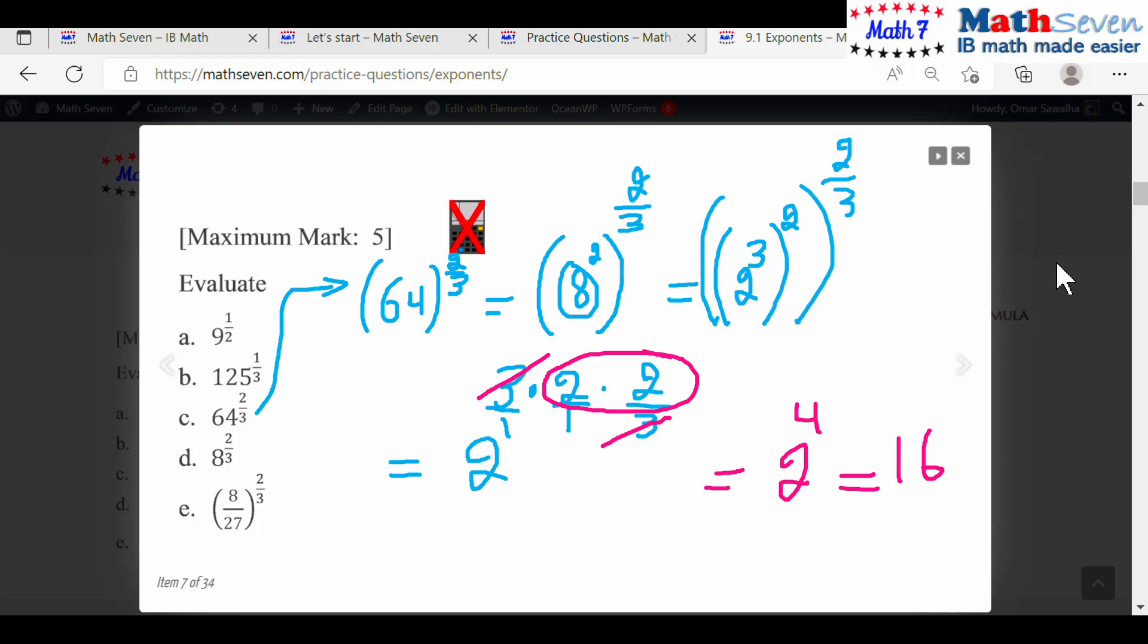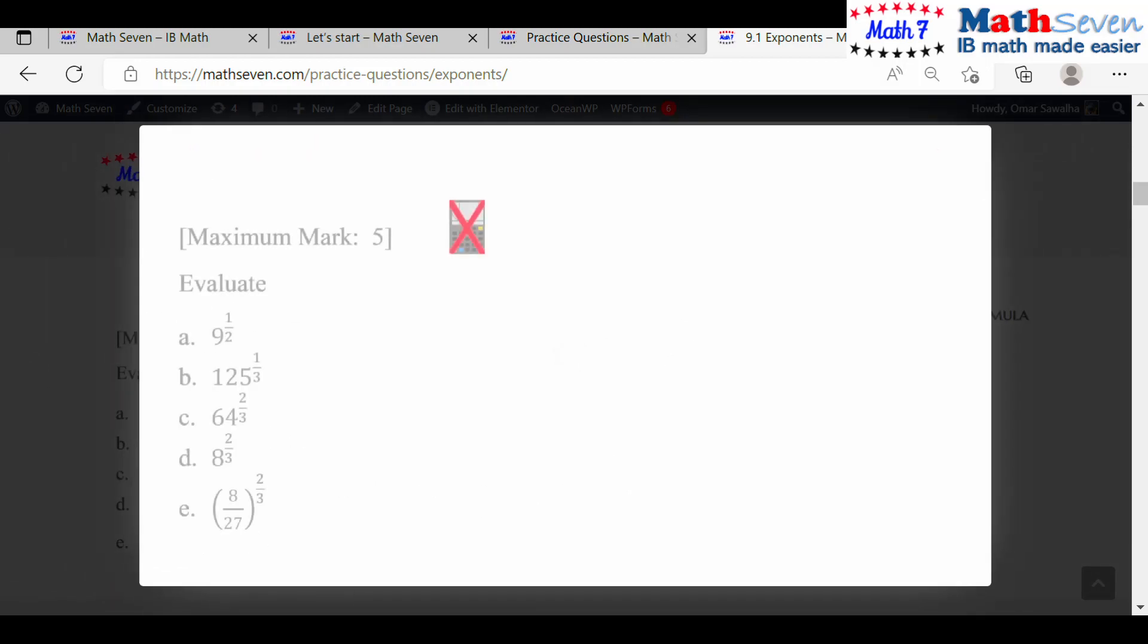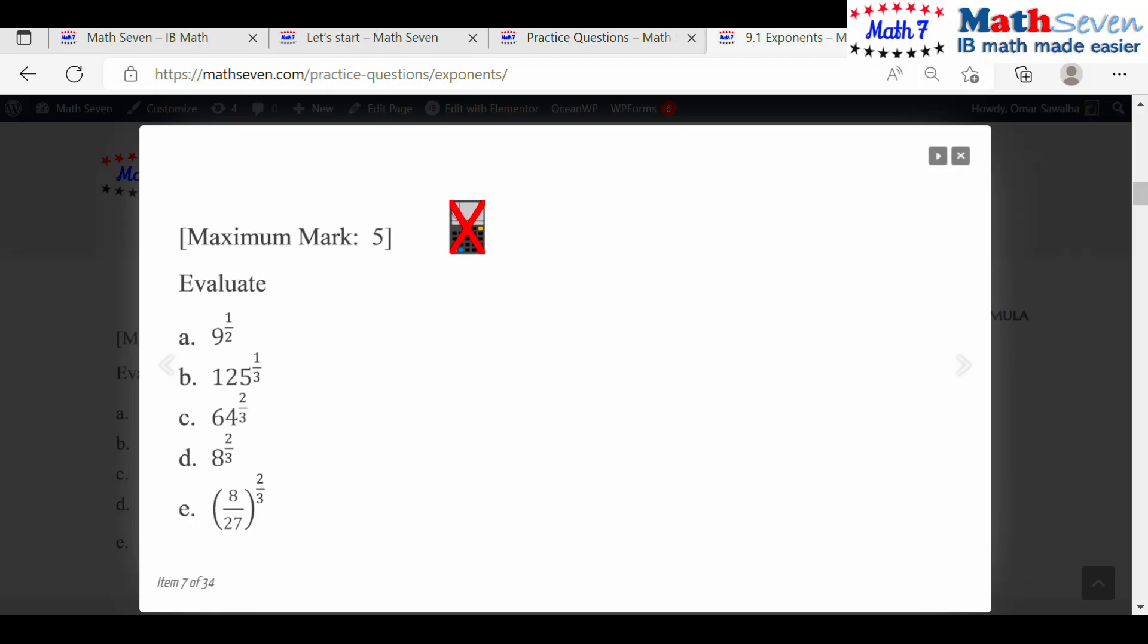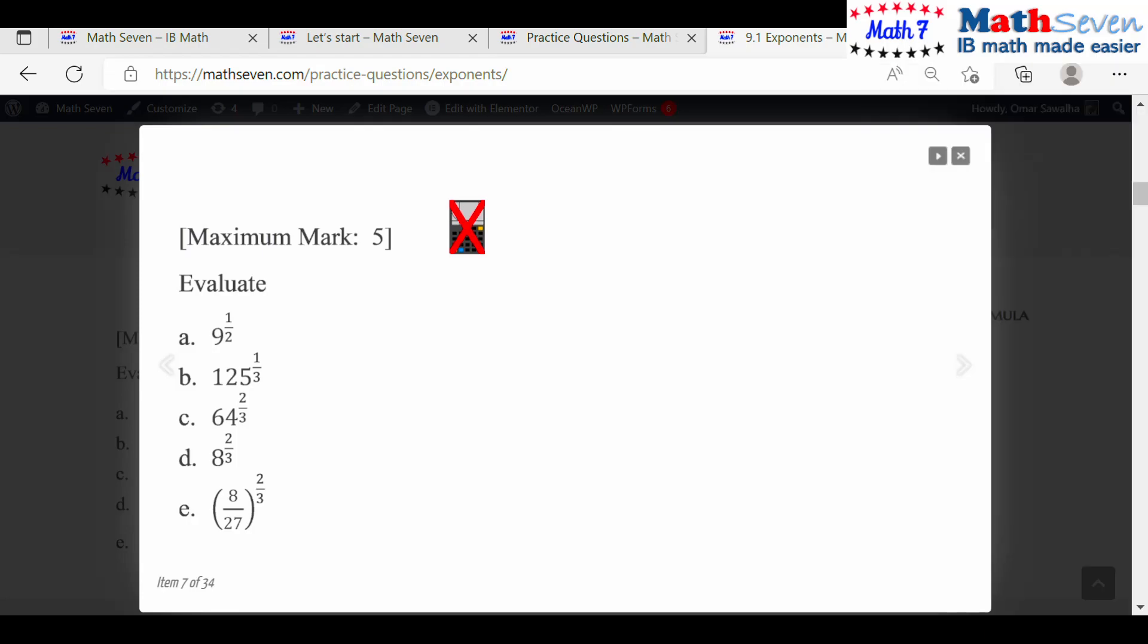Now, check your mark scheme. Look at your mark scheme. Is it 16? Yes, it is 16. Now, you can of course apply the calculator. I know it's a no-calculator question, but if you want to see it on the calculator, I'll show you how it's done on the calculator. So it's 64 to the power of 2 over 3. Just write 64 to the power of 2 over 3, close the bracket, equals 16.